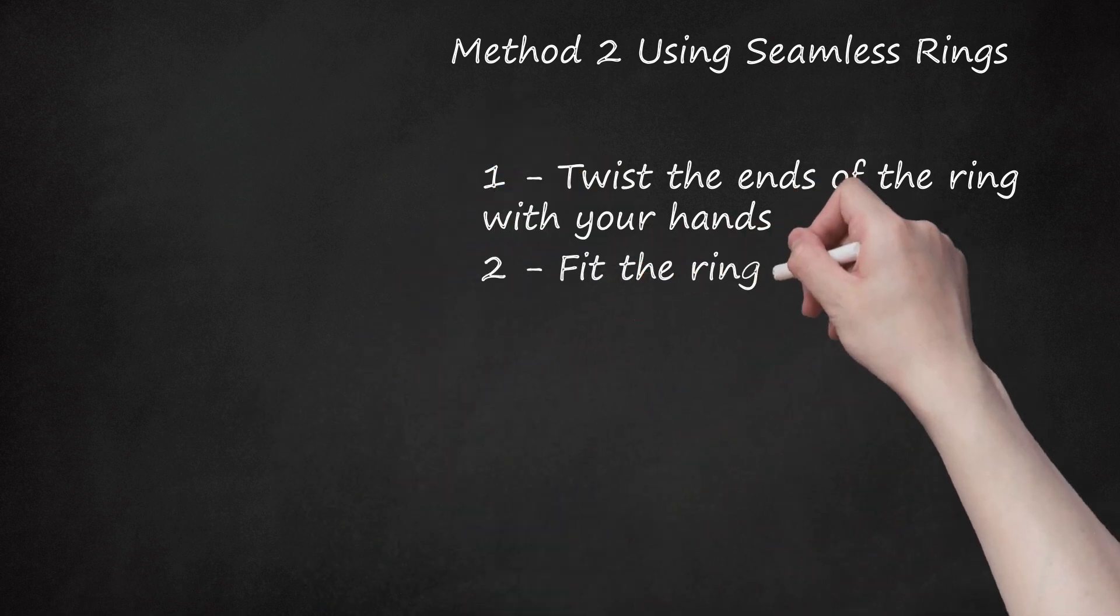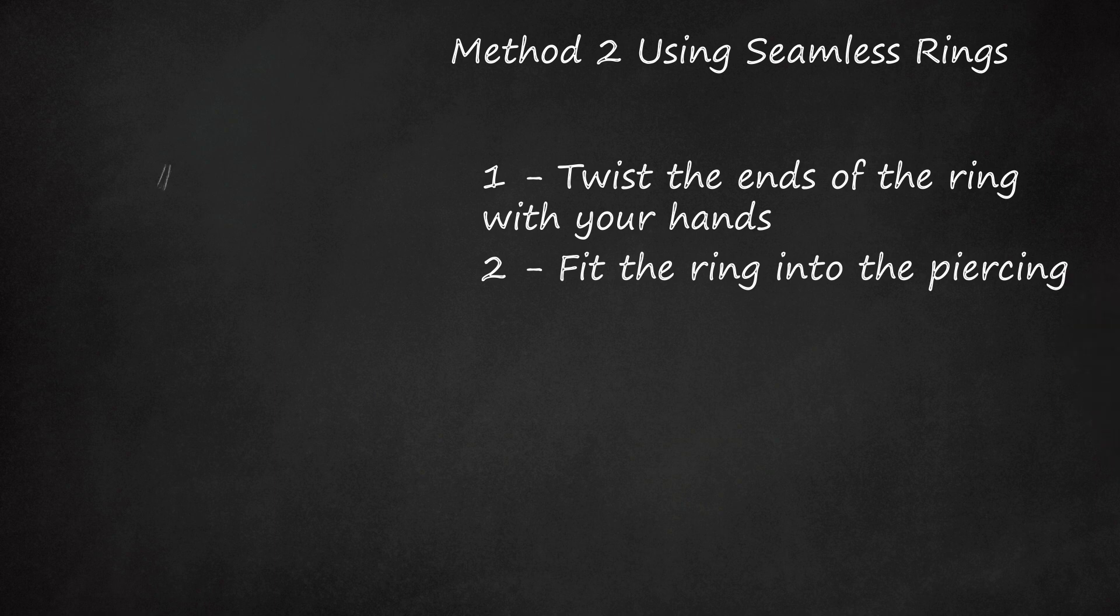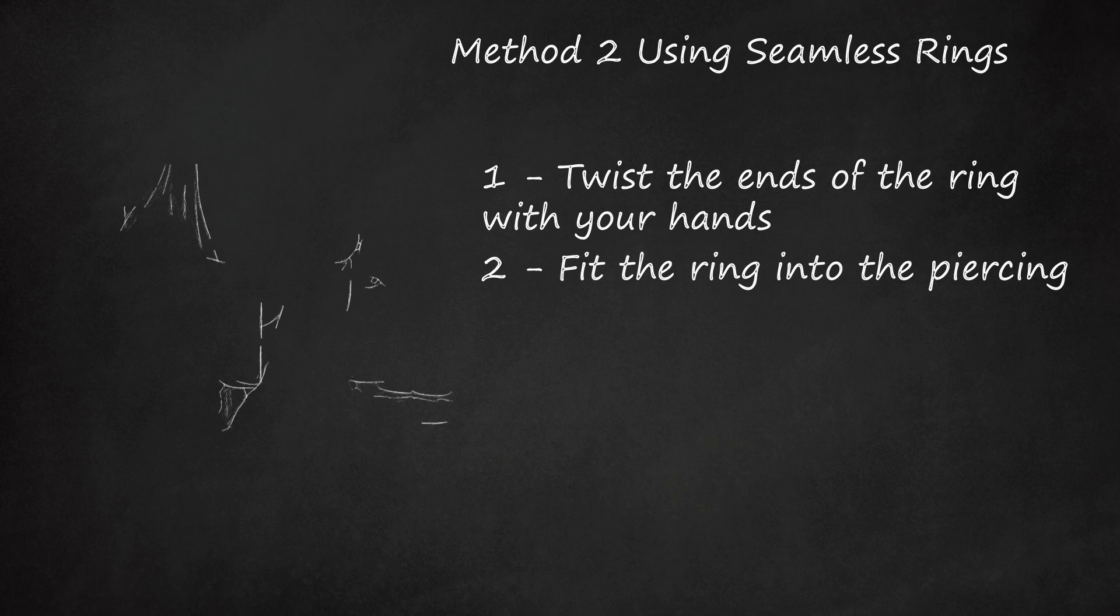Step 2 - Fit the ring into the piercing. Glide one open end of the hoop into the piercing hole. Slide the rest of the ring through the hole until the bottom of the hoop is centered in the piercing and the opening lies directly below it.